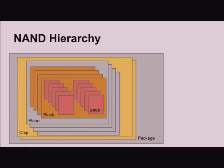You've got a number of blocks, each block has a number of pages, you have a number of planes contained within a chip, and then you have a number of chips within a package. This hierarchy is important because it determines how much parallelism you can get. Usually you get more parallelism until you get to this layer, and this is the layer where things start to bottleneck. You can only do one operation per plane, but with multiple planes you can do many operations in parallel. With multiple chips that act independently you can do things in parallel as well.